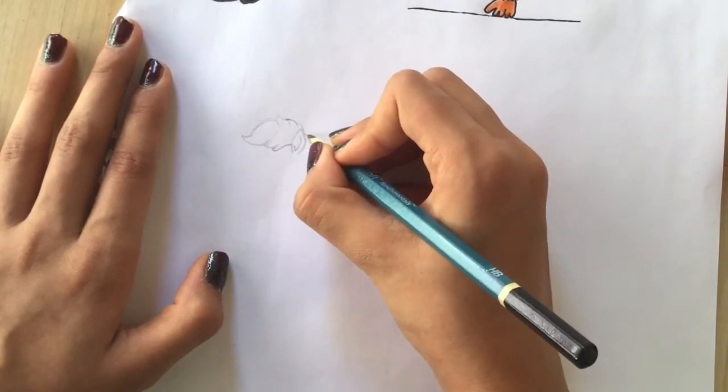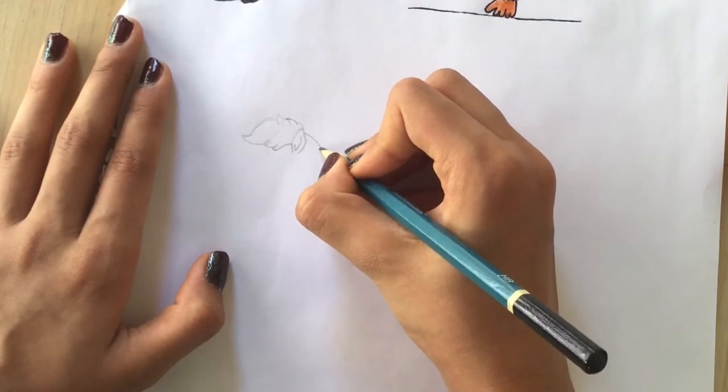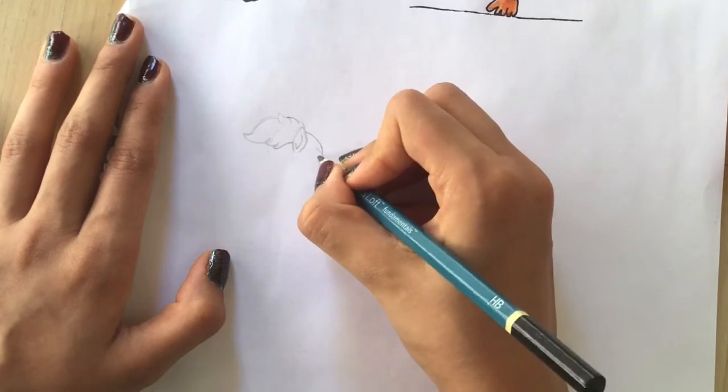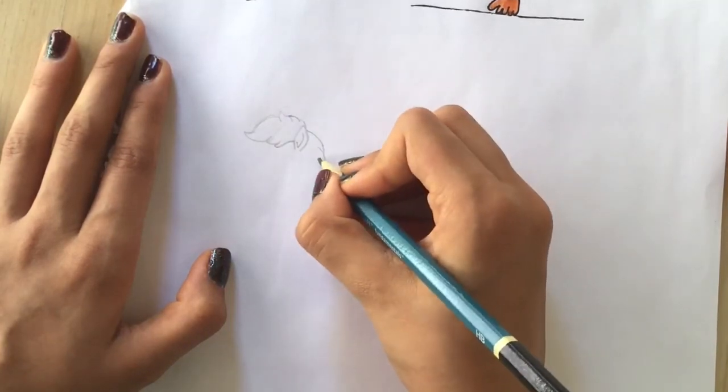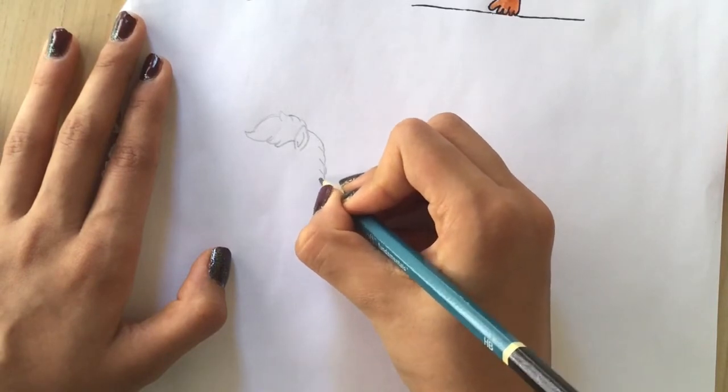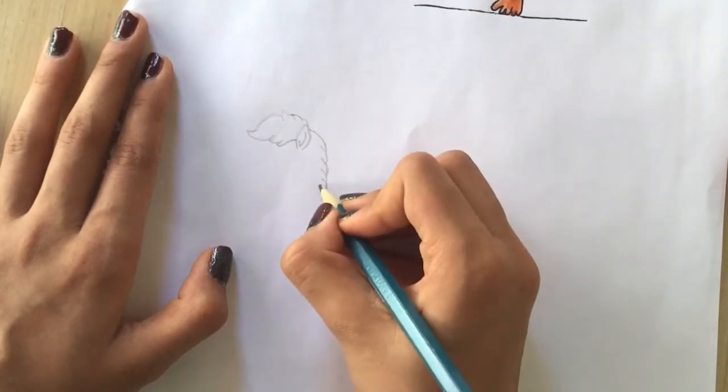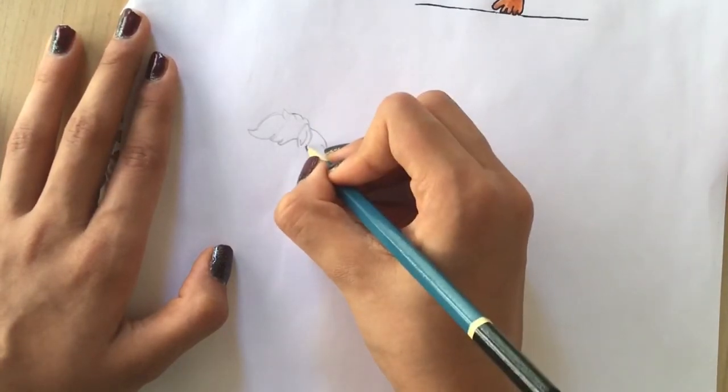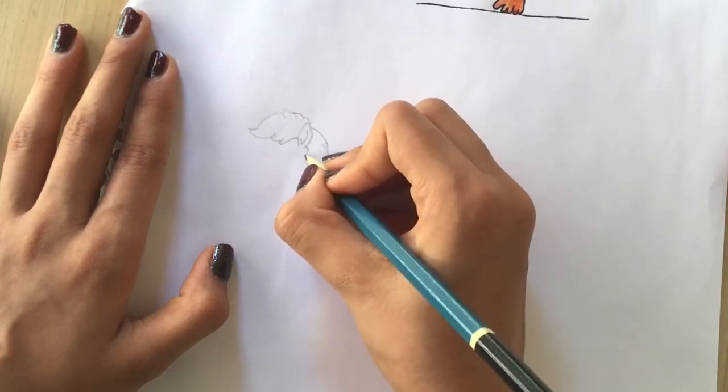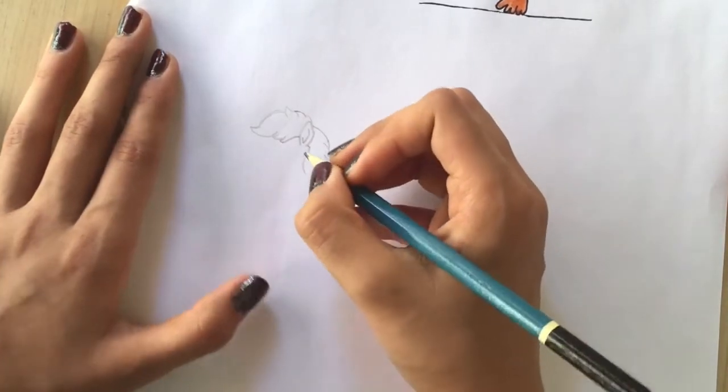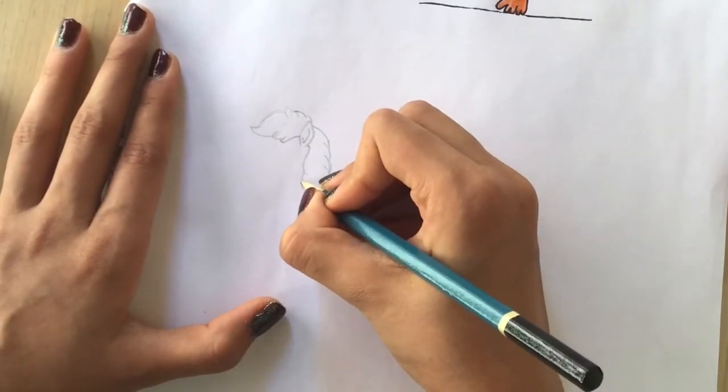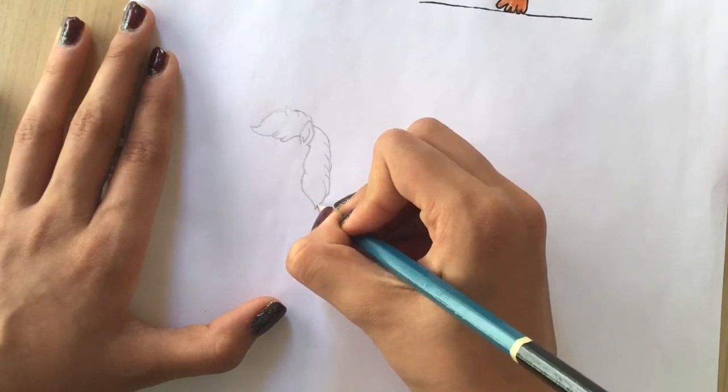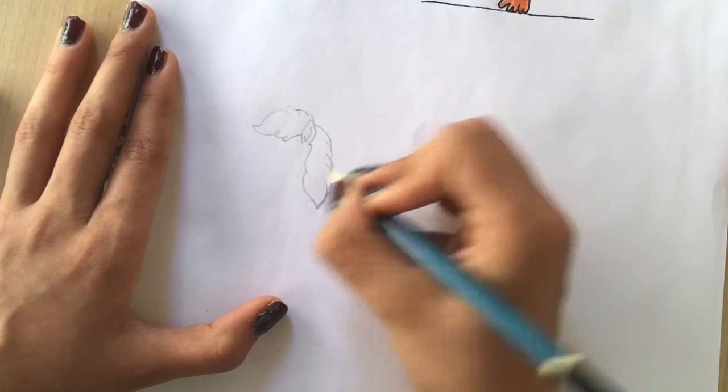Tie it behind the ear, and then from the ear add another lock going down. Another lock going down, just more and more, until finally you can bring it to a point. Go from behind the ear and draw a line, and then draw another, and gracefully bring it to an end.